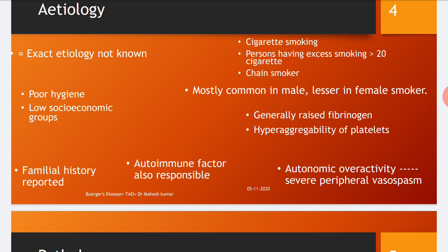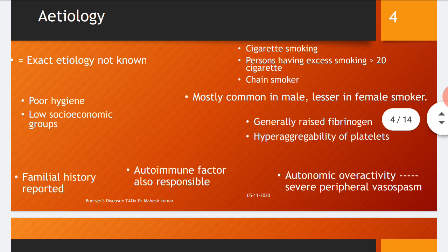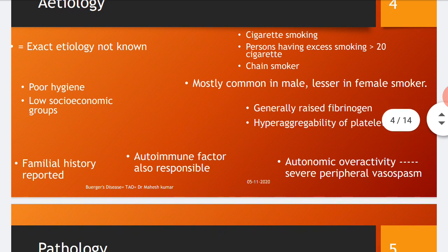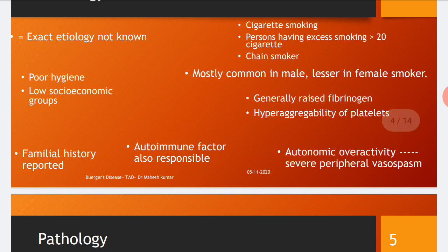The diagnostic criteria for Buerger's disease include: tobacco use, occurrence in males, disease onset before 45 years of age, distal extremity involvement first without embolic or atherosclerotic features, absence of diabetes mellitus or hyperlipidemia, and with or without thrombophlebitis.